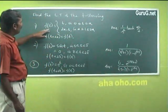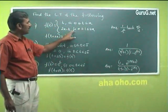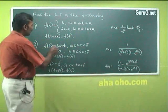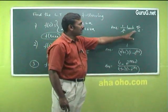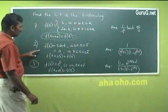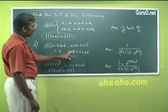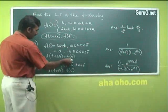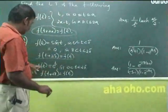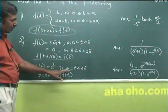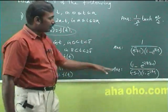For the following periodic functions, you can verify the answers: the second problem has f(t) = t for 0 ≤ t ≤ a and f(t) = 2a-t for a ≤ t ≤ 2a, periodic with period 2a. The third problem has f(t) = e^t for 0 < t < π and f(t) = 0 for π < t < 2π, periodic with period 2π. Another variant has f(t) = e^t for 0 < t < 2π, periodic with period 2π.